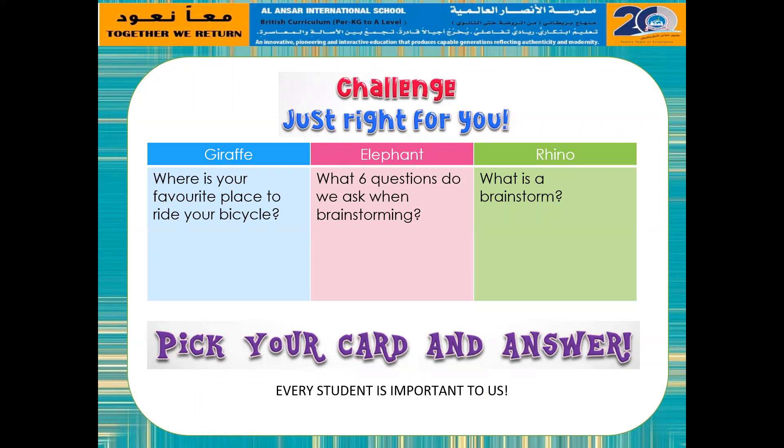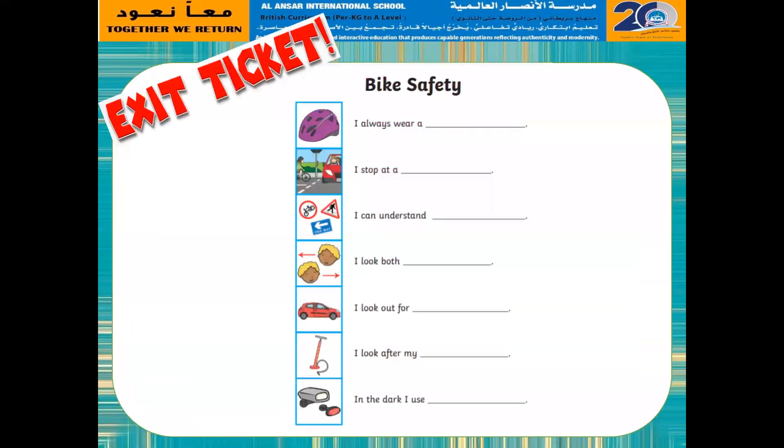Before we end this video, I have a challenge that is just right for you. Choose any one of these questions that you are comfortable with and write your answer down in your copy book. Then you can fill out this exit ticket about bike safety. Once you're done with that, go ahead and join me for part two of creative writing. Until next time, bye!